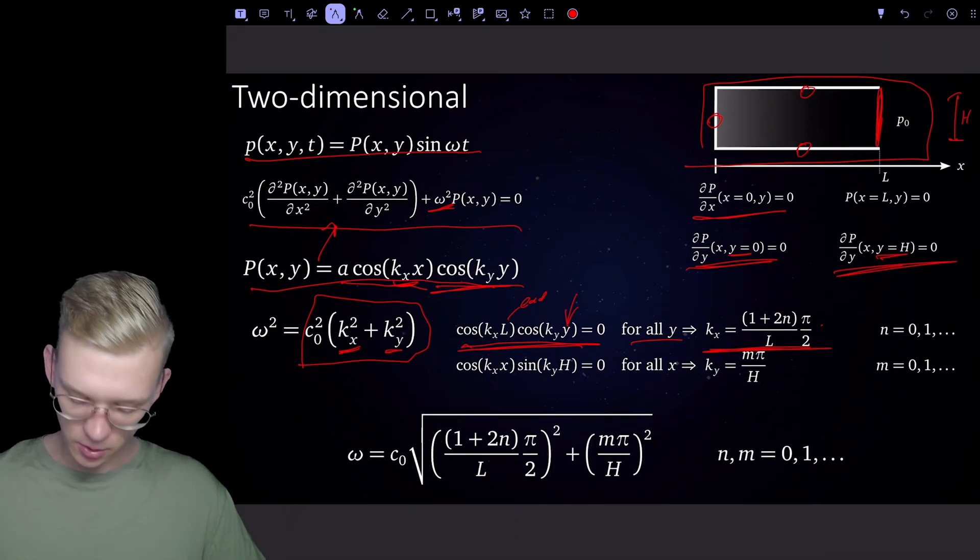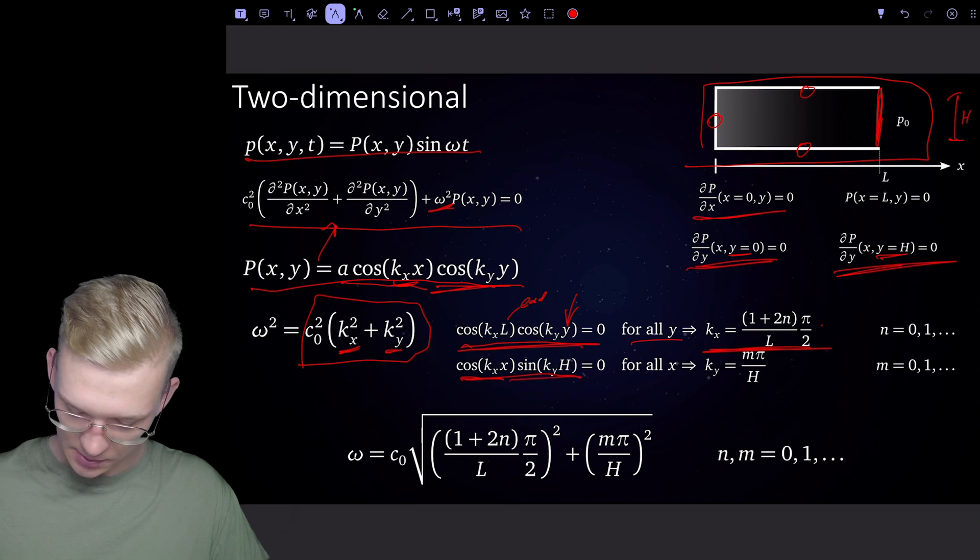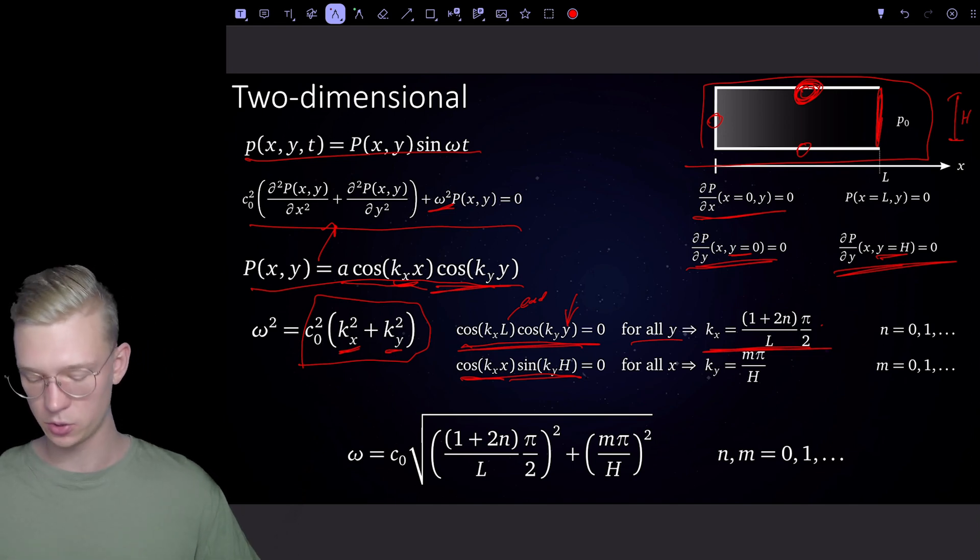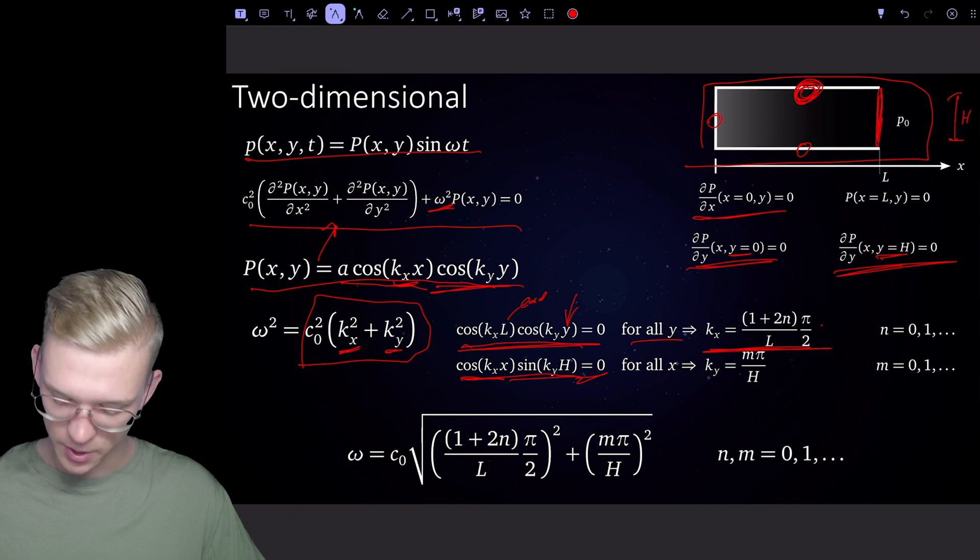For the y direction, we have a cosine times sine, because now we derive it once, because we say that we don't want to have any speed on the upper side of our tube. So we say that the pressure gradient is zero at that point. And this will lead us to k is equal to m times pi divided by h.